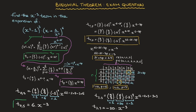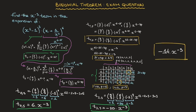We now have the two x to the power of negative 3 terms. To state the final answer, we add them together: 6 times x to the power of negative 3 plus negative 20 times x to the power of negative 3 equals negative 14 times x to the power of negative 3. And we're done — that's it for this exam-style question involving the binomial theorem.